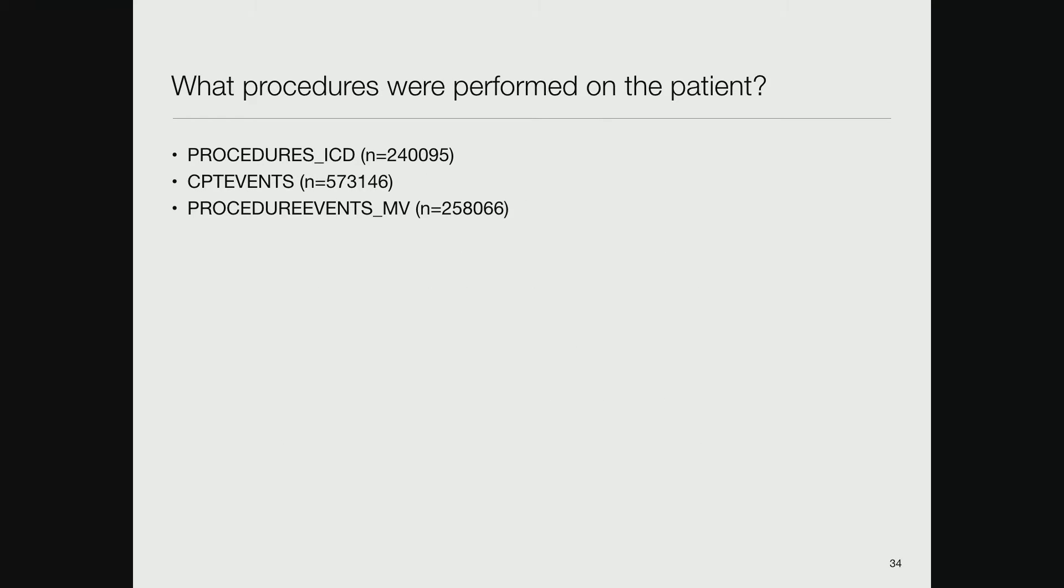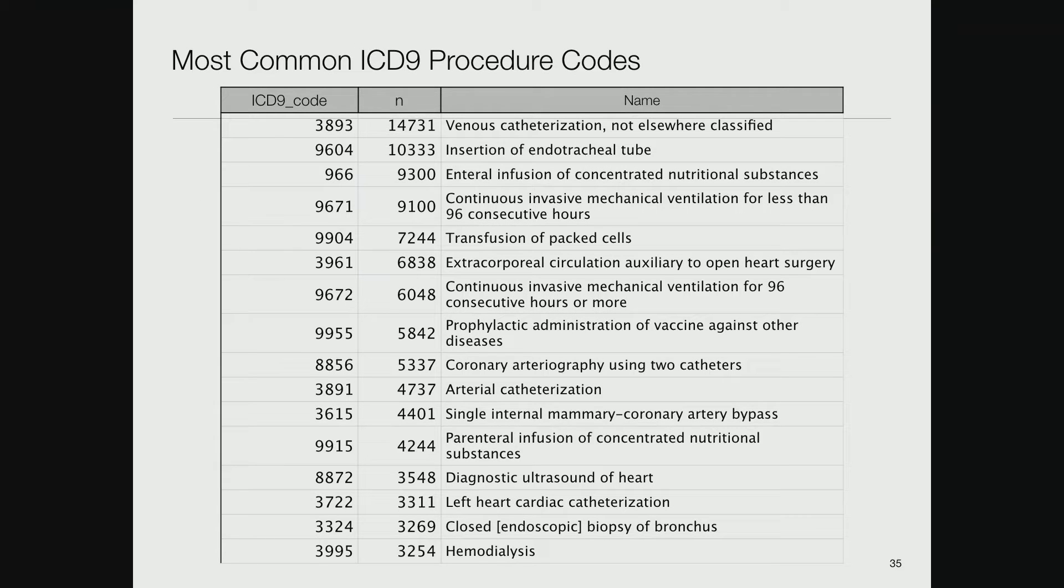What procedures were done to a patient? In MIMIC there are three tables: procedures ICD with ICD-9 codes for about a quarter million procedures, CPT events with about 600,000 events in CPT terminology, and MetaVision with about a quarter million procedure events.